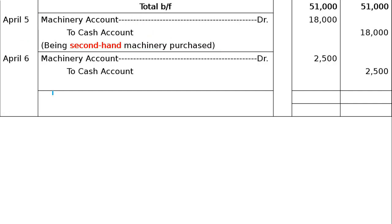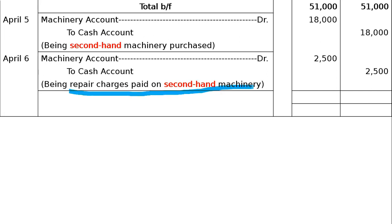Narration: being repairing charges paid on second-hand machinery. This increases the value of the machine. However, if repairing or overhauling is done on an existing machine, then Repairs Account is debited — not Machinery Account. Finally, we total both sides to carry forward to the next page.